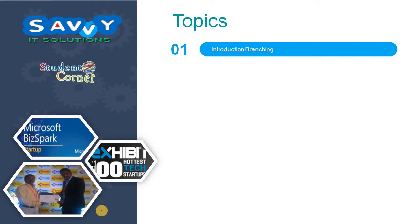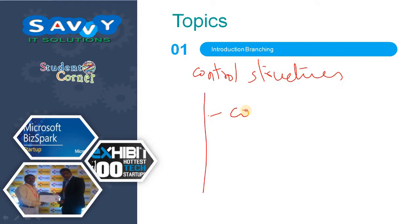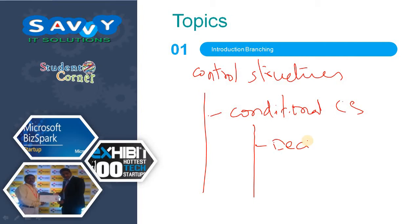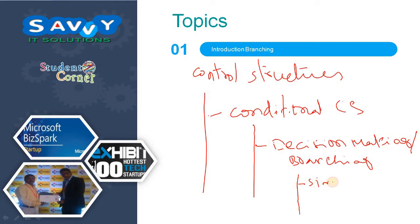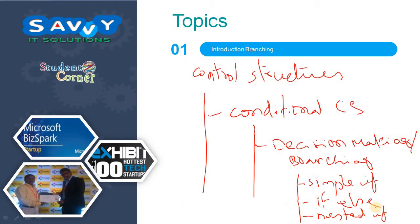In the last video we discussed about the control structures. Under these control structures we have conditional control structures. Under these conditional control structures we have decision making or branching. So under these we have simple if, if-else, nested if-else, and else-if. Now we are purely discussing about simple if in this video.